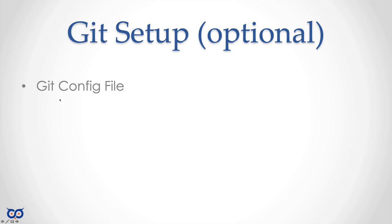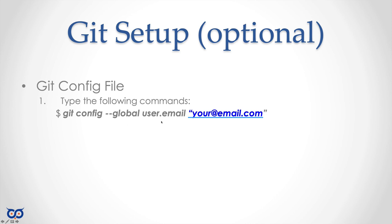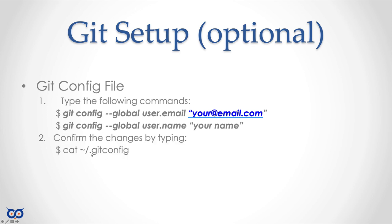If you installed Git, Git needs a config file that tells it your name and email address. You can run two commands to set both of those things, or you can open the config file directly. Run the commands to confirm the config file was created. That's all you need for the Git configuration.